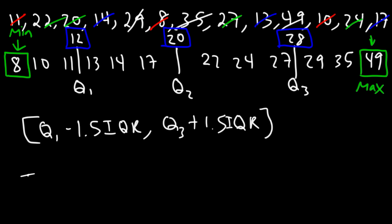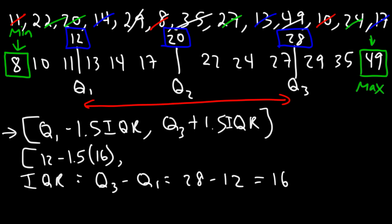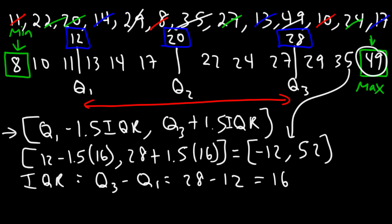The IQR, the interquartile range, is the difference between Q3 and Q1. Q3 is 28 and Q1 is 12, so the interquartile range is 16. Using this interval: Q1 is 12 minus 1.5 times 16, and Q3 is 28 plus 1.5 times 16. That gives us negative 12 to 52. Now, 8 is within this range, so 8 is not an outlier — it is the minimum of the data set. 49 is also between negative 12 and 52, so 49 is not an outlier either.